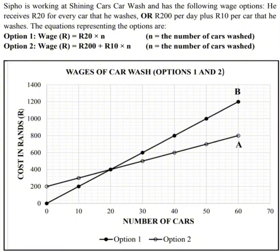So for option B, if he doesn't work, he receives nothing. For option A, if he doesn't work, he still receives 200 rand. That is the reason why that graph begins at 200. You must not forget that.